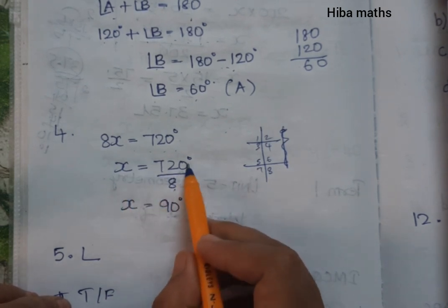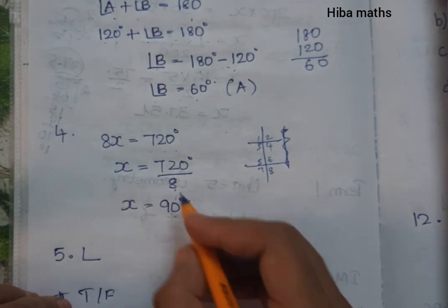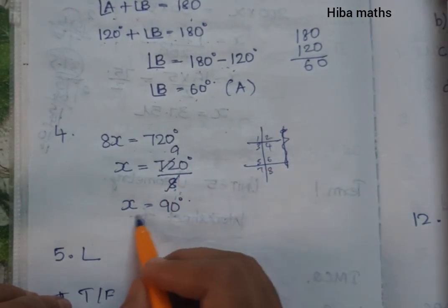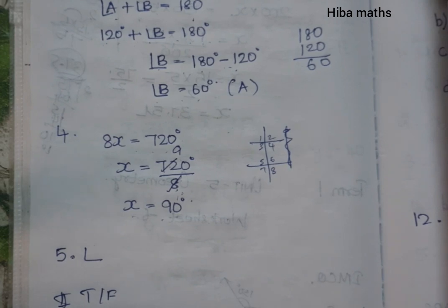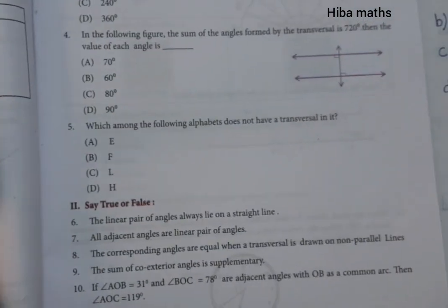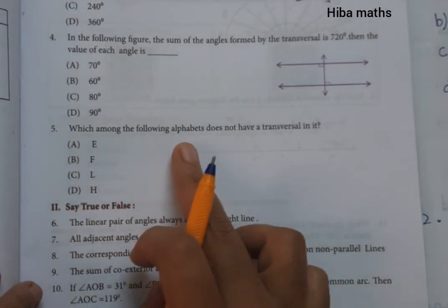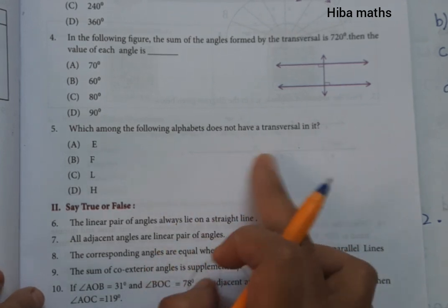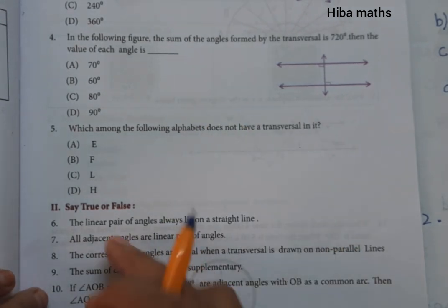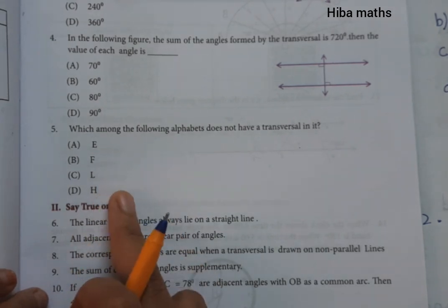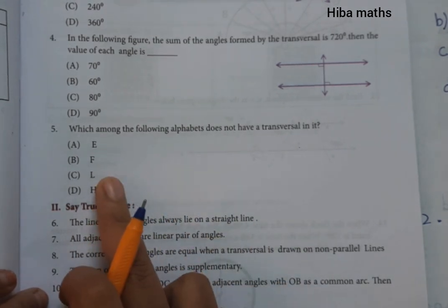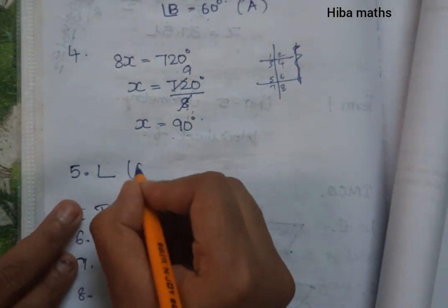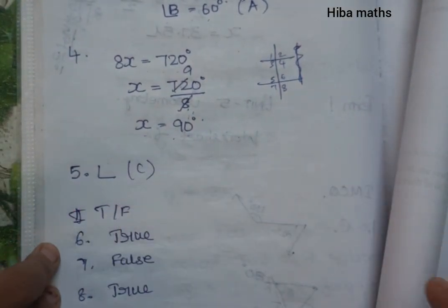So x is equal to 720 degrees divided by 8, which equals 90 degrees. That is the answer. For the fifth question — which alphabet does not have a transversal in it — a transversal means two lines cut each other. The answer is option C, which is the letter L.